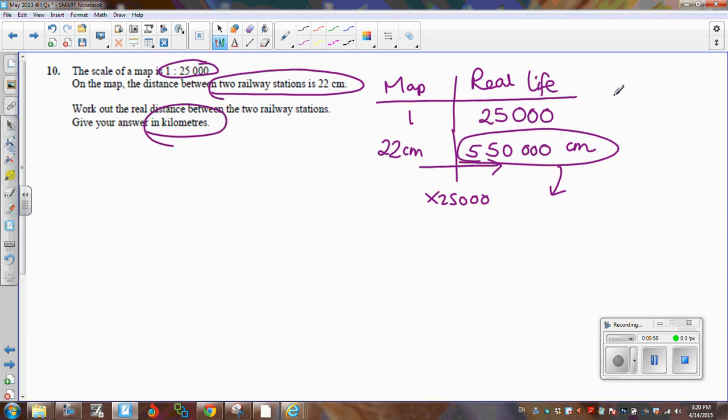First of all, I'm going to change from centimeters to meters. Remember, one meter is the same as 100 centimeters. To change this into meters, we're going to have fewer meters because meters are much bigger. So I'm going to divide by 100. If I divide this by 100, I'm going to take off two zeros.